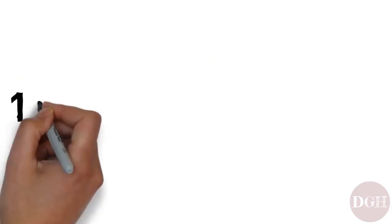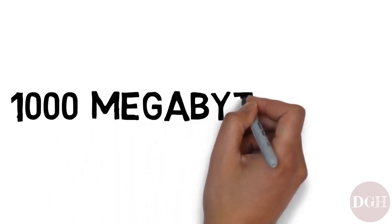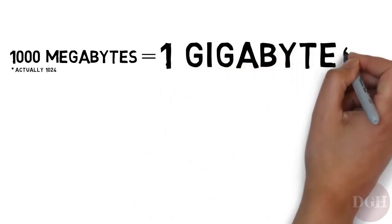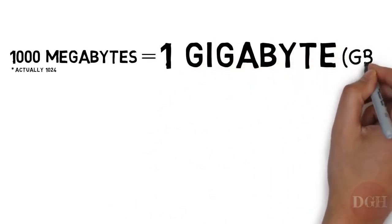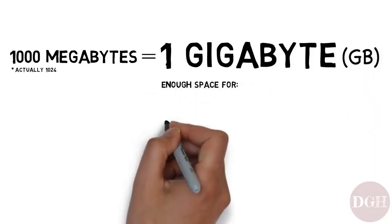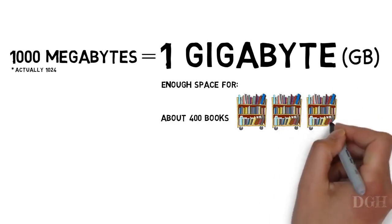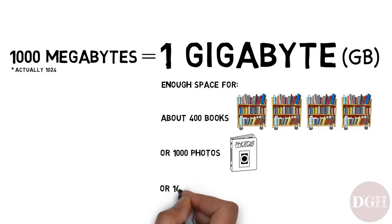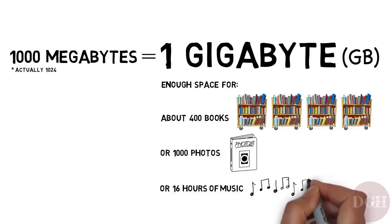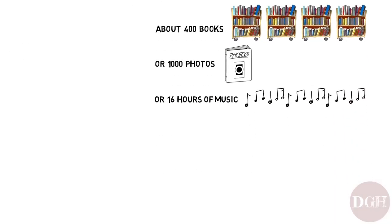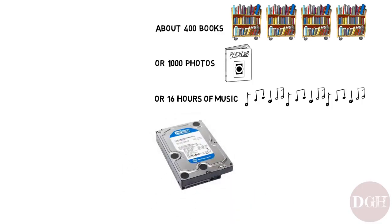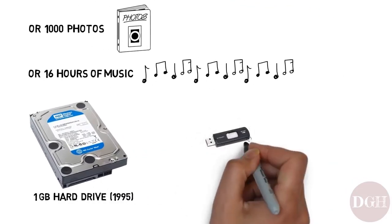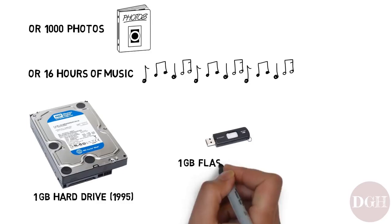Now you're probably wondering: what's it called if you have a thousand megabytes? A thousand megabytes is called a gigabyte. It's enough space to hold about 400 books, or a thousand pictures, or 16 hours of music. By the mid-1990s, you could buy a one-gigabyte hard drive for a couple hundred bucks. Today, you can buy a one-gigabyte flash drive for about five dollars.